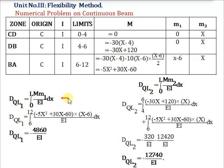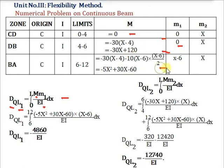Displacement of release structure in direction of first redundant: DQL1 = ∫(0 to L) M·m1/EI dx. Zone CD: 0 × 0 = 0. Zone DB: (-30X + 120) × 0 = 0. Zone BA (6 to 12): ∫(-5X² + 30X - 60)(X - 6)/EI dx. Solving gives DQL1 = -4860/EI.